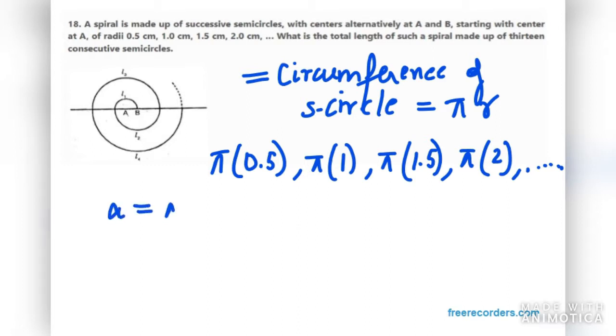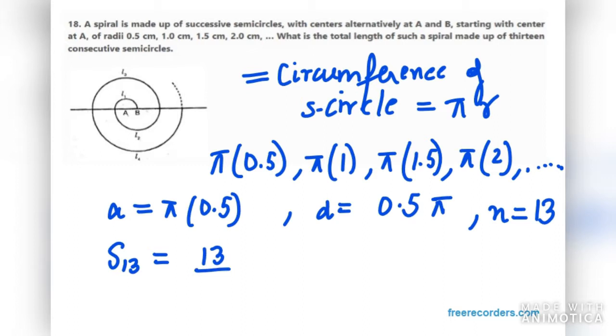So in this case, my A is π times 0.5 and my d is 0.5π, and n in this case is 13. We need to find S₁₃ in this case. So S₁₃ equals 13 over 2, in bracket, twice of A, that is 0.5π, plus n minus 1, that is 13 minus 1, so 12 times d.